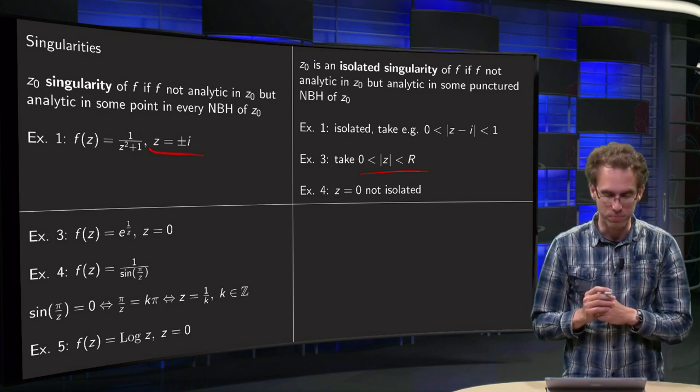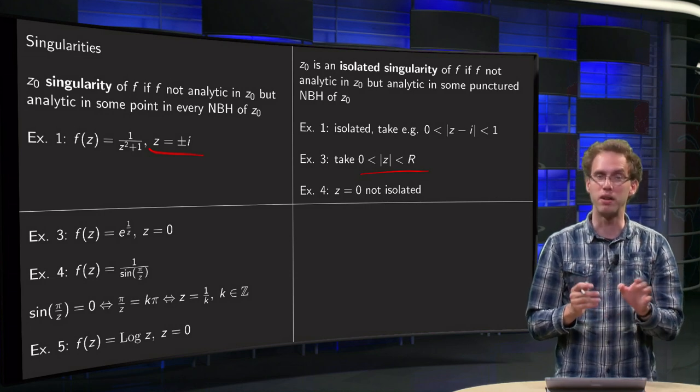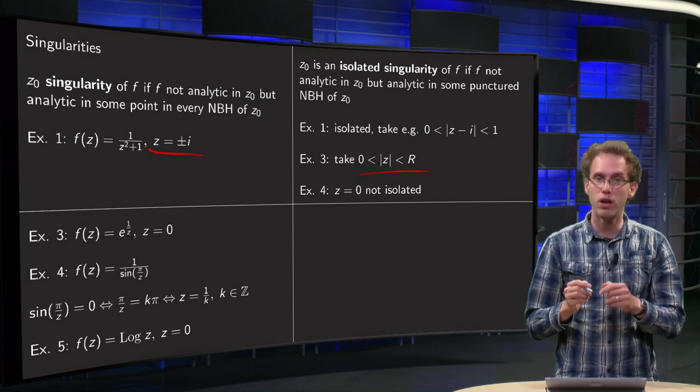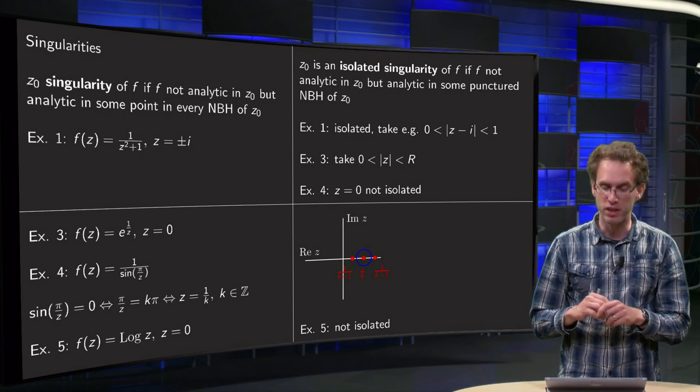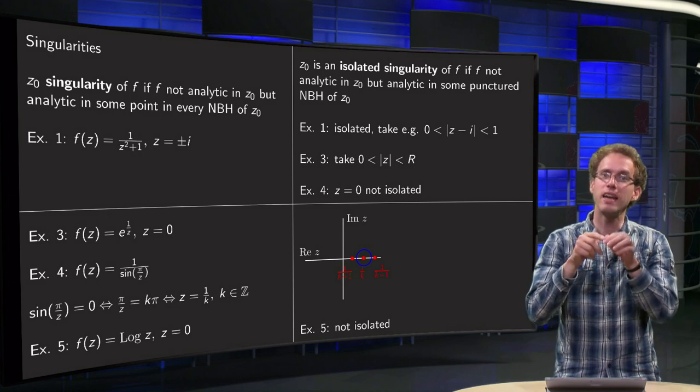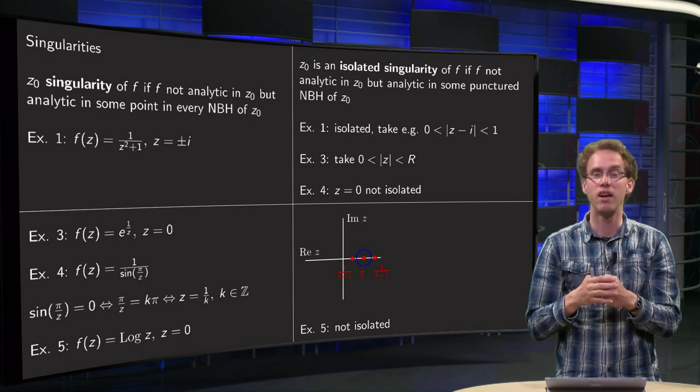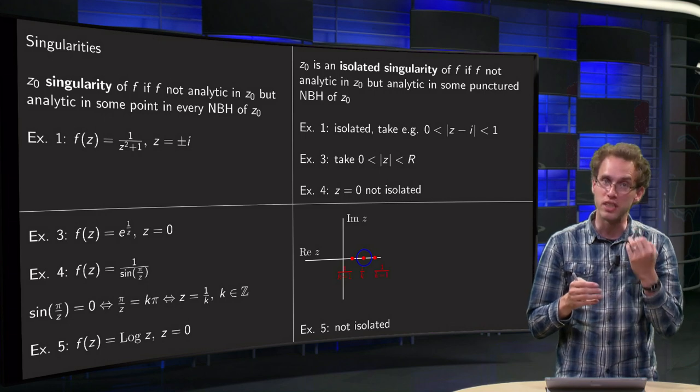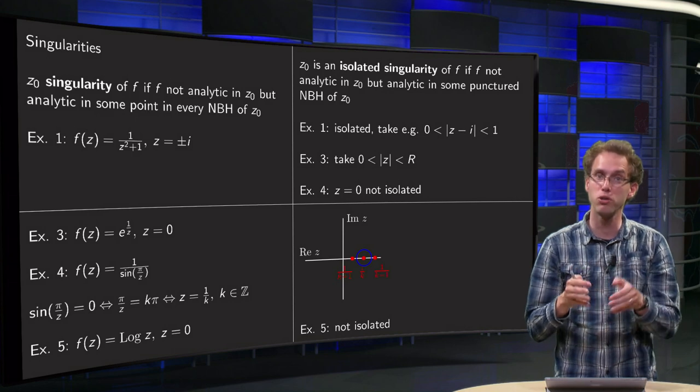Now example 4 is a bit more tricky, your z equals 0 is singularity, you are dividing by 0, so you get all kinds of trouble there. However your other singularities are at 1 over k, so any disk you draw around the origin will also contain points which are also singular, so that means that your z equals 0 is not an isolated singularity, there are infinitely many points together which are also singularities.